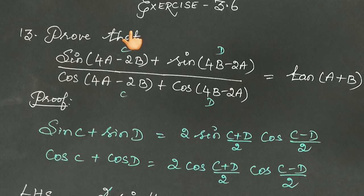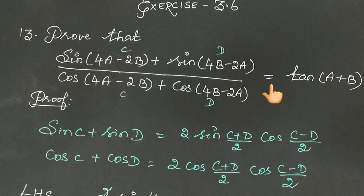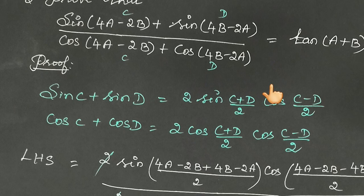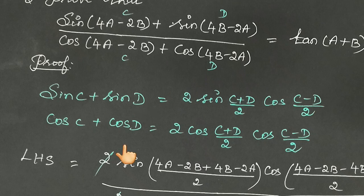First, you need to note which identity matches. The numerator is of the form sin C plus sin D, and the denominator is cos C plus cos D. So we have the identities: sin C plus sin D equals 2 sin of (C plus D) by 2 into cos of (C minus D) by 2. And cos C plus cos D equals 2 cos of (C plus D) by 2 into cos of (C minus D) by 2.